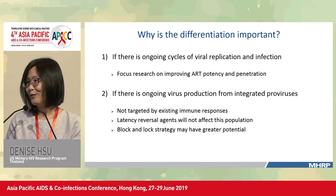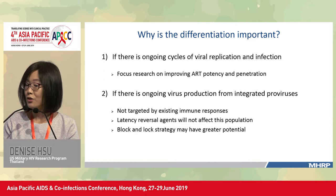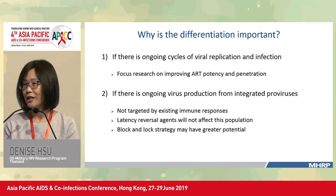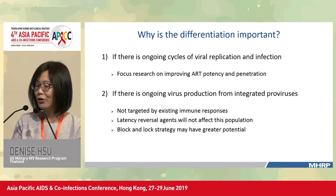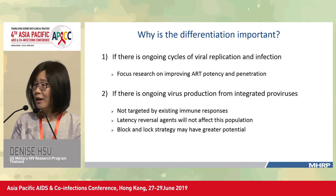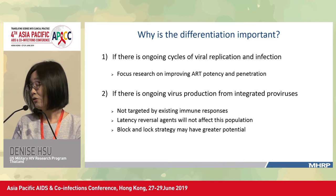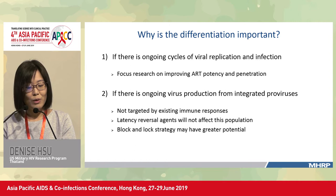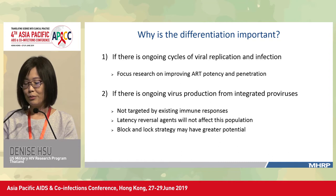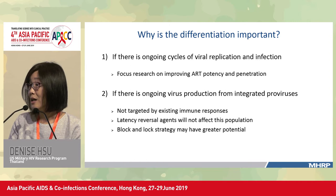Understanding these mechanisms matters because the ways of targeting them are very different. If ongoing cycles of viral replication are due to inadequate ART potency or penetration, the focus should be to improve ART. However, if ongoing virus production is from clones of integrated proviruses, these are not targeted by existing immune responses, and latency reversal agents will not affect them because these cells are not latent — they're already actively transcribing. This raises the question of whether we can use a block-and-lock strategy, though this is only at the animal model stage.